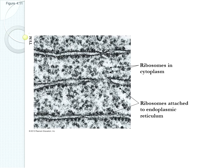Looking at a transmission electron micrograph, all those little dots are ribosomes. Some of them are free ribosomes, and some of them are attached to the ER, these membrane-bound plates of organelles.